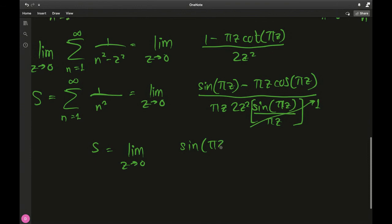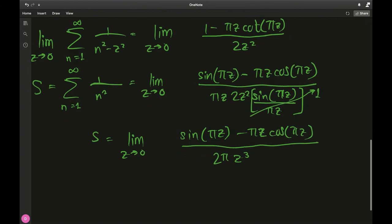We have sine of πz minus πz cosine of πz divided by 2πz cubed, and this just went to 1. Now we have a 0 over 0 situation again, but it's way easier to deal with because we just have a polynomial in the denominator, so we can apply L'Hôpital's rule.